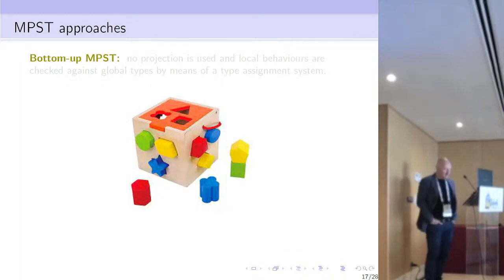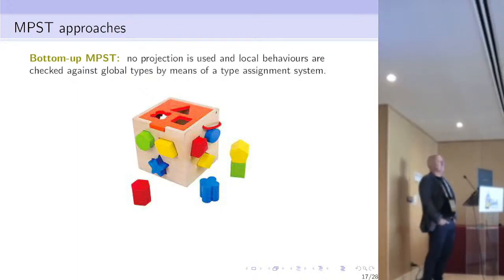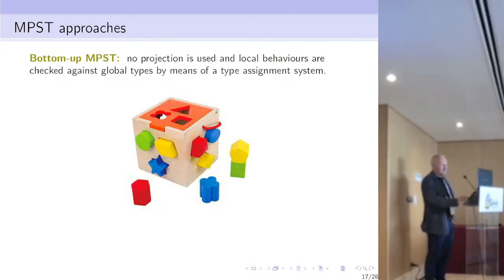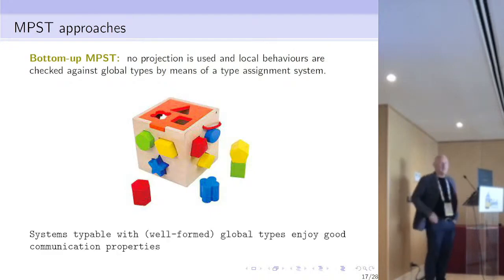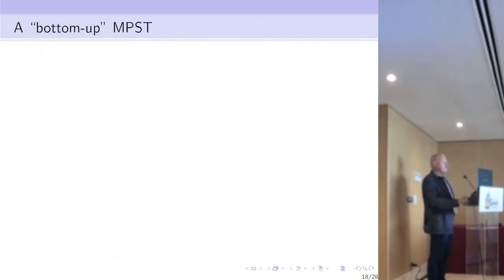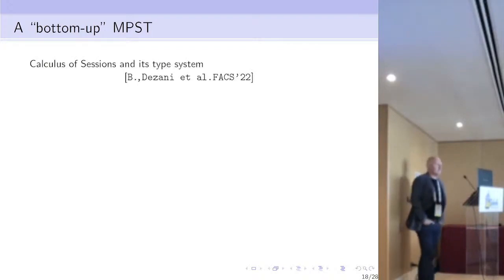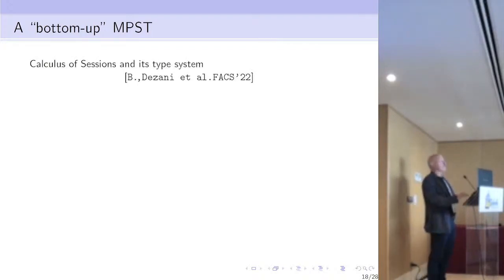Bottom-up multi-party session types are formalisms where no projection is used at all: local behaviors are checked against global types by means of type assignment systems. Even here, systems typeable with well-formed global types enjoy good communication properties.